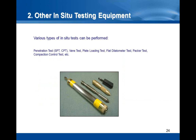The geotechnical engineer has the choice between numerous types of in-situ tests: for example, penetration test, vane test, plate loading test, flat dilatometer test, packer test, and the list goes on. In the second part of my presentation, I will briefly talk about two other well-known in-situ testing equipment in which Rocktest has experience: first, the vane tester, and second, the cone penetrometers.